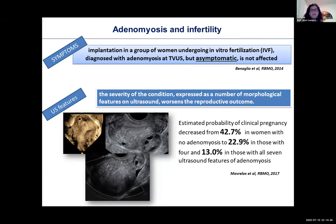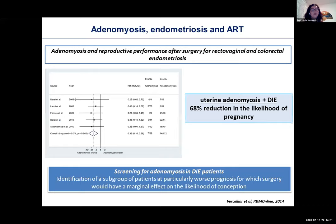Regarding the association between adenomyosis and endometriosis: after surgery for deep endometriosis, especially colorectal endometriosis, coexisting adenomyosis results in a 68% reduction in likelihood of pregnancy. So in all patients with endometriosis, please check the uterus and screen for adenomyosis — it identifies a subgroup with the worst prognosis where surgery may not have as good an effect. Feel free to ask about all aspects of the diagnosis.